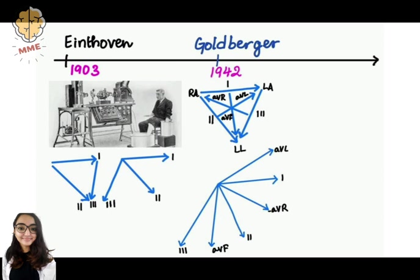To improve the diagnosis, Goldberger thought it made sense to cut the angles in half, which he accomplished with the help of a resistor network.